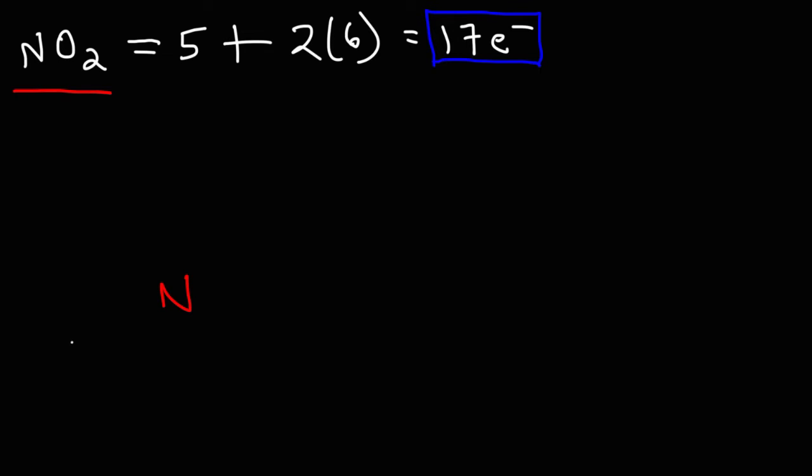So we have our central nitrogen atom and our two oxygen atoms. And we know that nitrogen is going to have one electron, or half a lone pair, on it. Now, nitrogen wants to have eight electrons at most. Right now it has one.